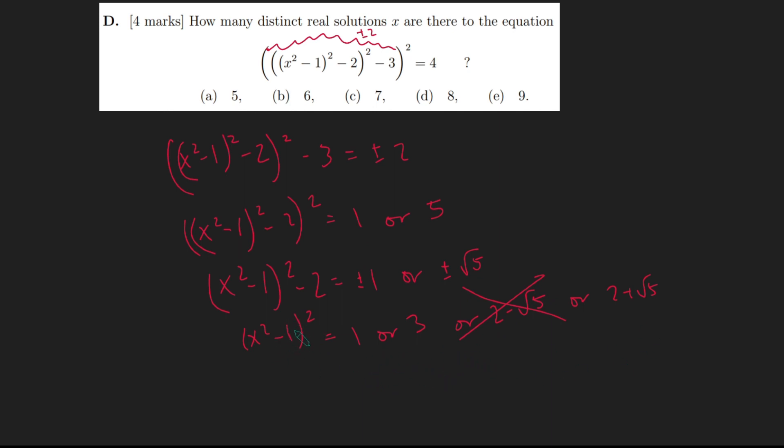Now I'm going to deal with this square root and say that x squared minus 1 must equal plus or minus 1 or plus or minus root 3 or plus or minus root 2 plus root 5. And then I'm going to get x squared equals 1 plus or minus 1, so 0 or 2, and then 1 plus or minus root 3, so that's going to be 1 plus root 3.